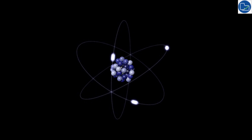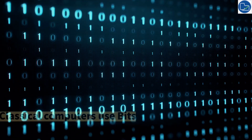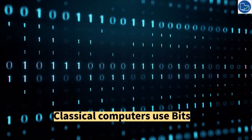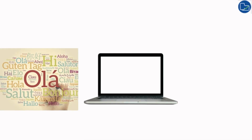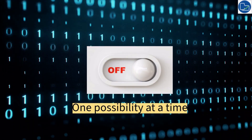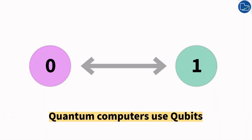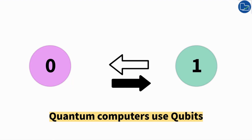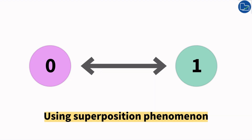To understand quantum computing, let's first recall classical traditional computing. Traditional computers like your phone or laptop use bits, which is the smallest unit of information — either zero or one — and with this they perform operations one at a time. Quantum computers, on the other hand, use quantum bits or qubits, which can be either zero, one, or both zero and one simultaneously, using a phenomenon called superposition.